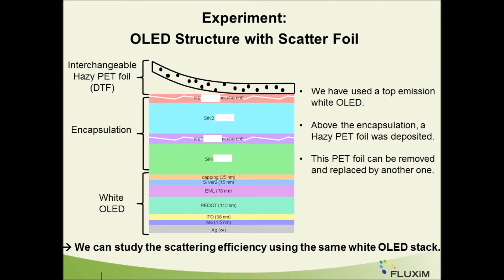We now have a nice model for simulation of OLEDs including scattering tricks, but it is important to compare simulation results with experiments. The experimental device chosen consists of a top-emitting white OLED with thin film encapsulation. On top of it, we can introduce an interchangeable AZ-PAT foil. This way, we can study the effect of scattering efficiency using the same white OLED stack — we just need to replace the AZ-PAT foil with another one.